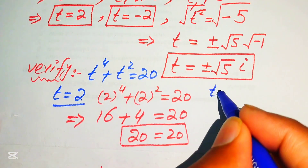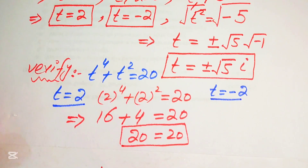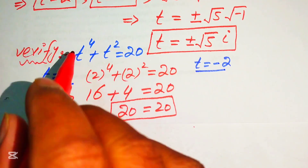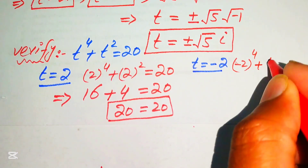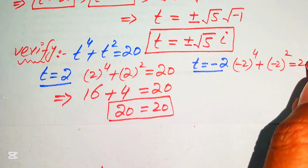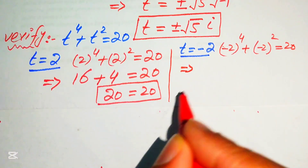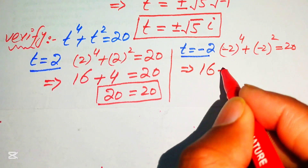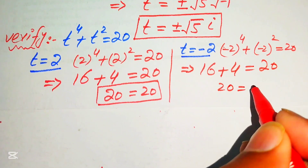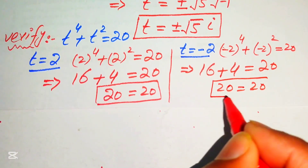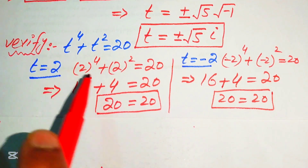Similarly, we verify t equals minus 2. Substituting t equals minus 2: minus 2 to the power of 4 plus minus 2 squared equals 16 plus 4 equals 20. So t equals minus 2 also satisfies the given equation.